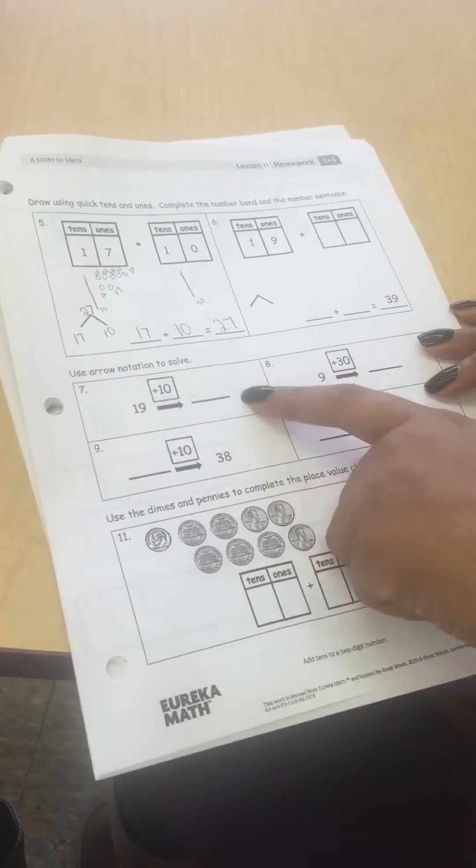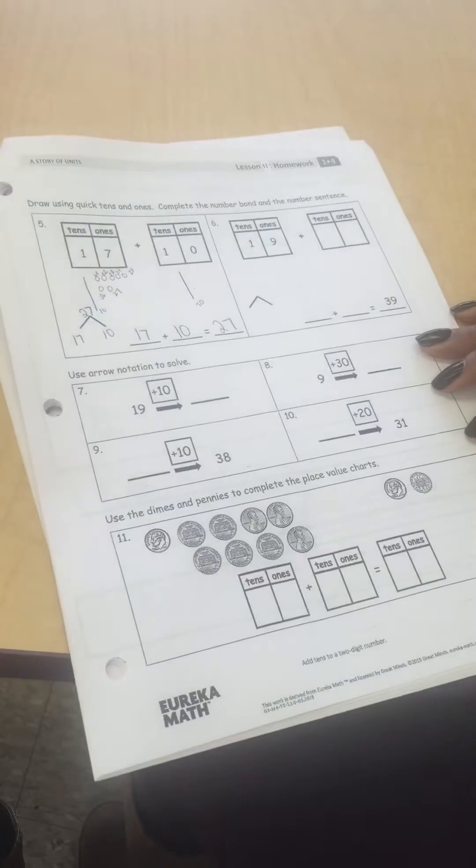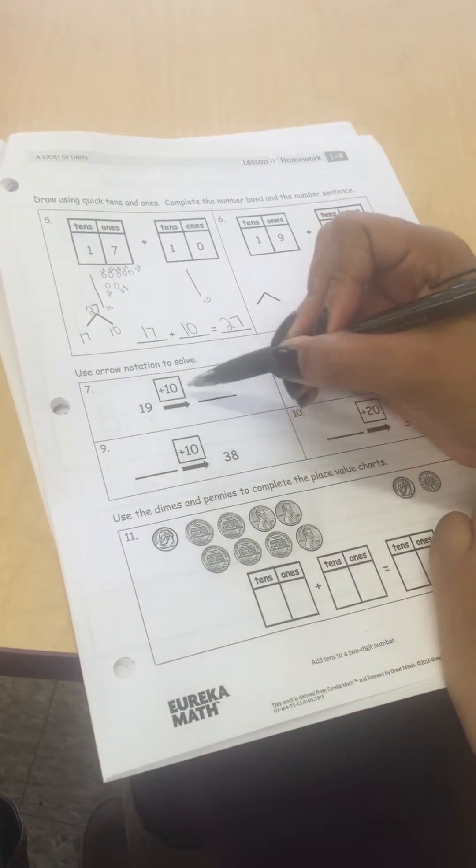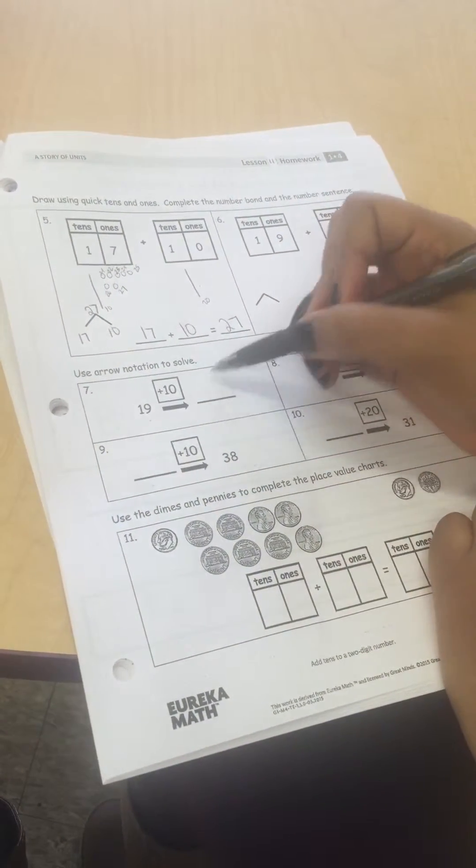Number seven says use arrow notation to solve. Basically it's starting with your part, adding another part to get your total.